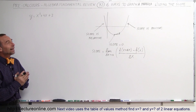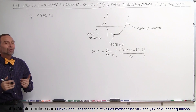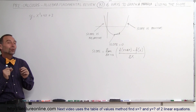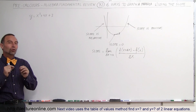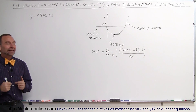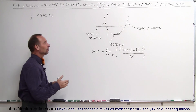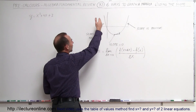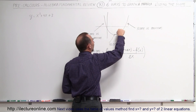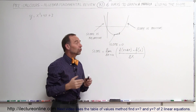Welcome to ElectronLine. Now we're going to use our sixth method of graphing parabolas. In this case we're going to use the slope — it's kind of a preview of what's going to come in calculus. What we recognize is that if we have a parabola, the slope of the line that represents the parabola is always changing.